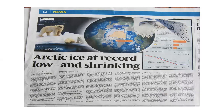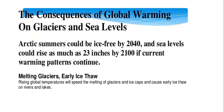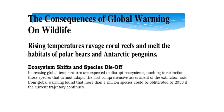The polar ice cannot persist. The consequence of global warming includes glaciers melting and sea levels rising. By 2040, sea levels could rise as much as 23 inches by 2100 at current warming patterns. Consequences on wildlife include rising temperatures damaging coral reefs and melting habitats of polar bears and Antarctic penguins, leading to ecosystem shifts and species die-offs.